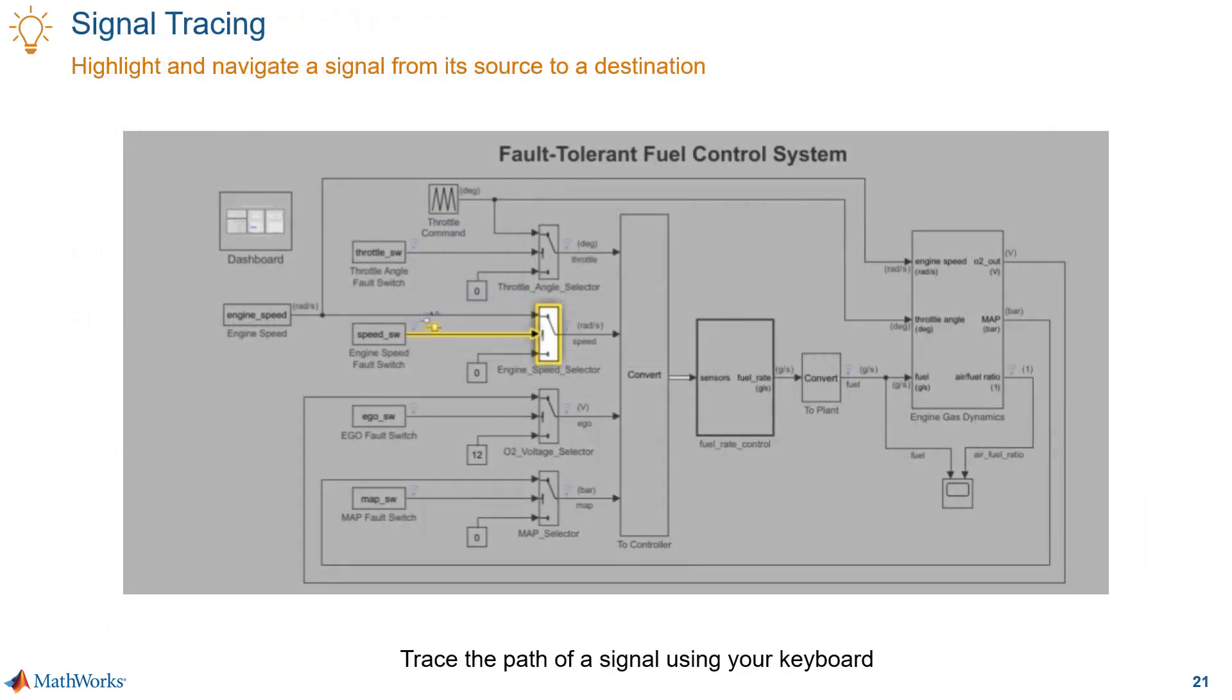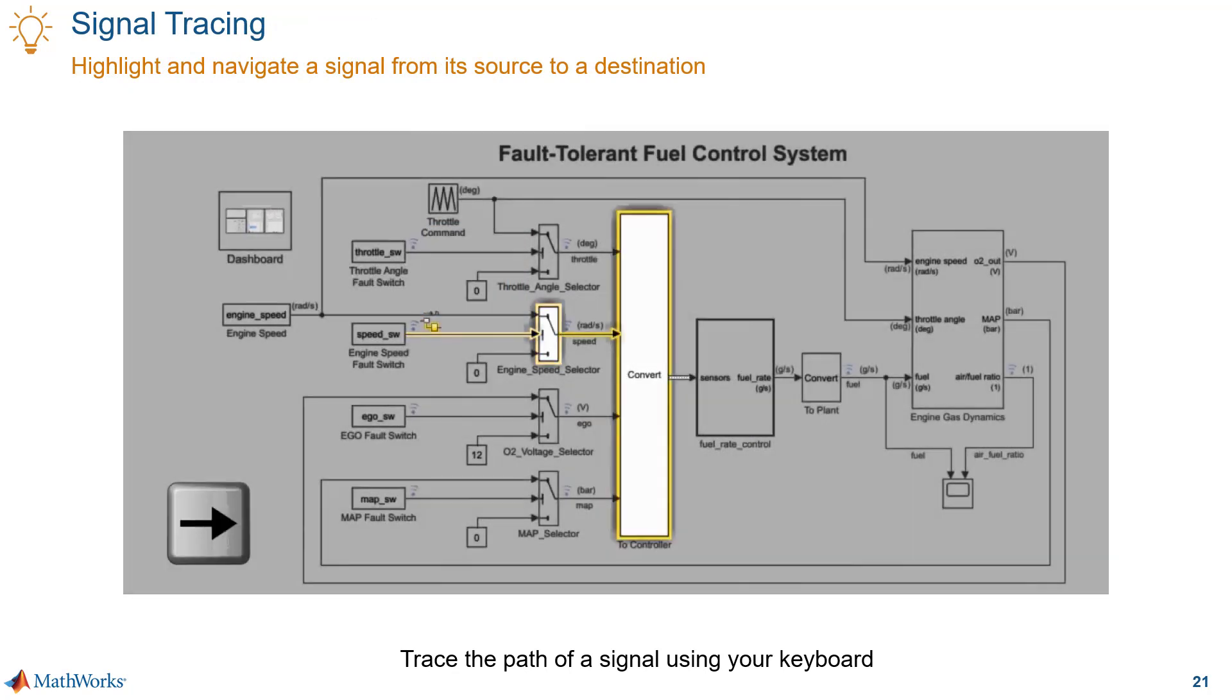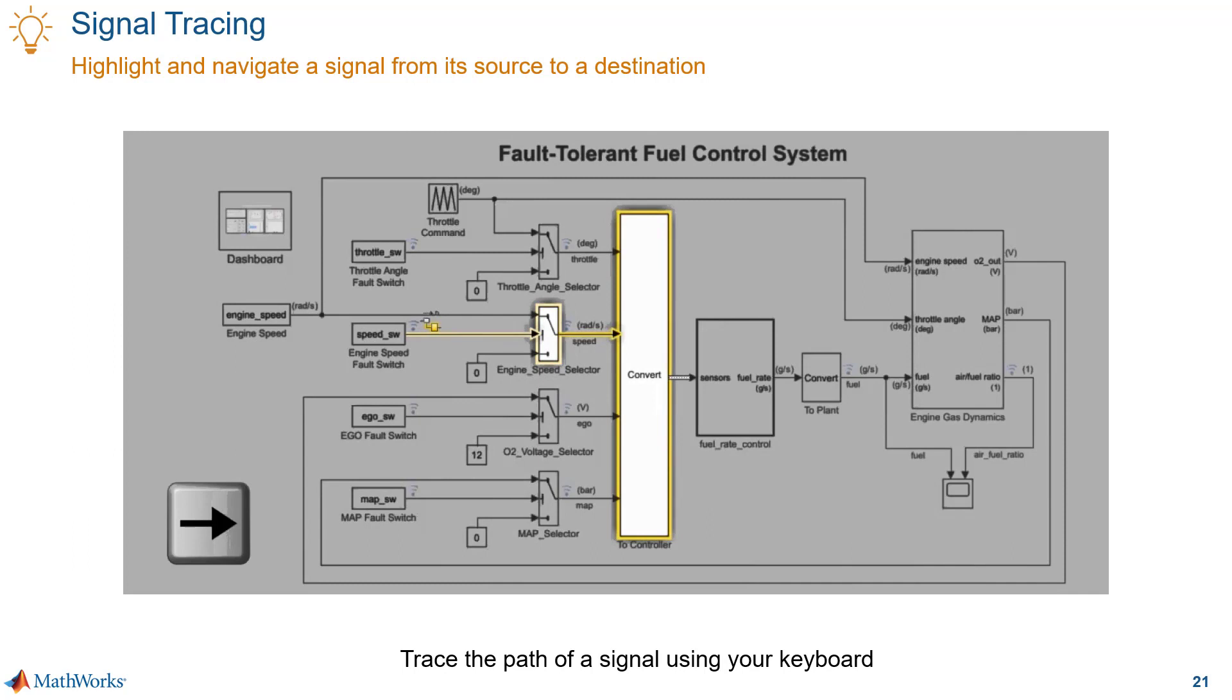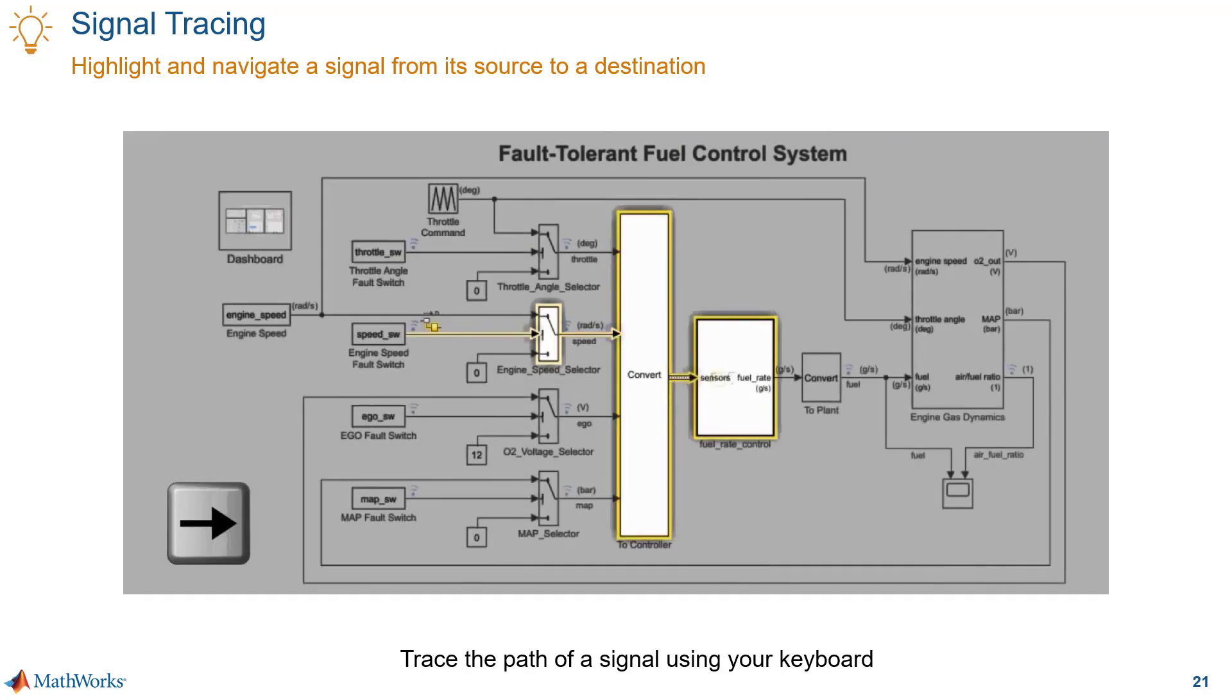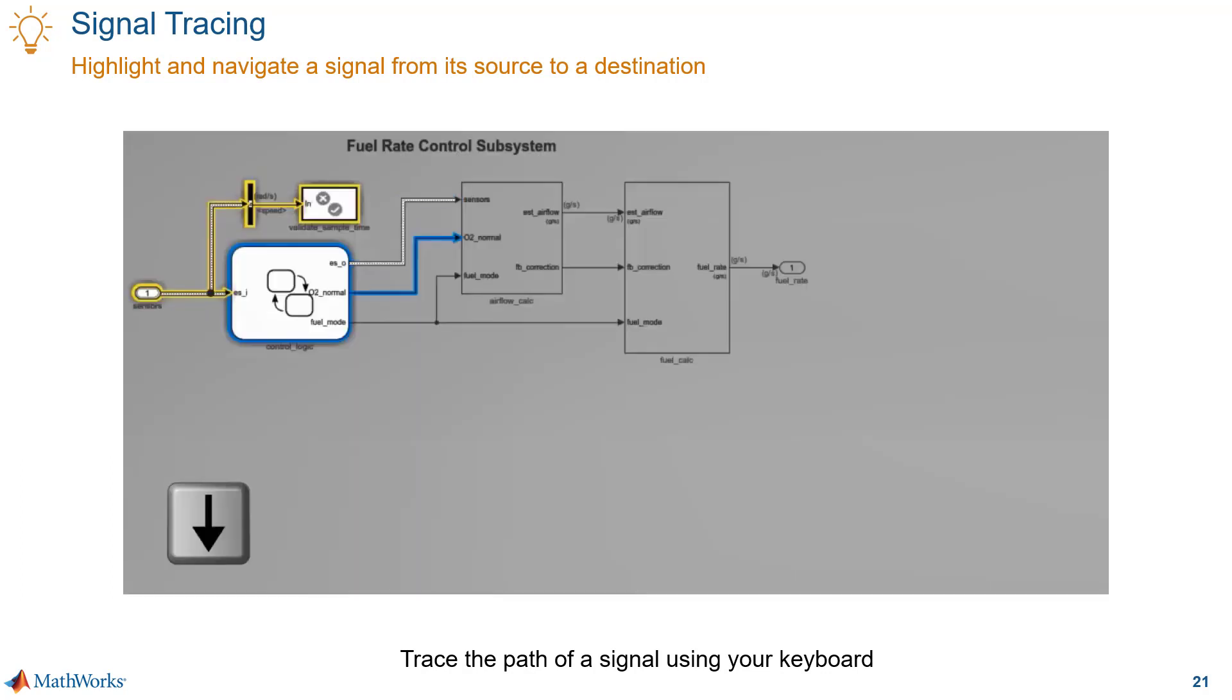One of the big ones for debugging is signal tracing. The enhancement here is you can trace the signals with your keyboard, meaning you can navigate back and forth easily to trace signals to source and destination. You can also trace signals across model references, subsystems, and other blocks. When there are multiple possible paths, you can use the down and up arrows to select and follow the path that you want. That is really useful when debugging your models.